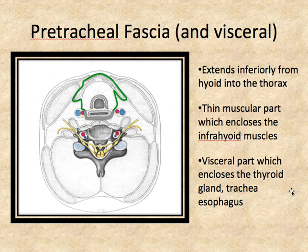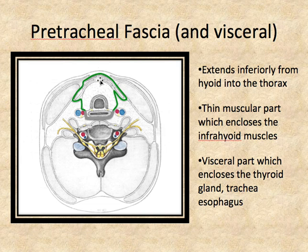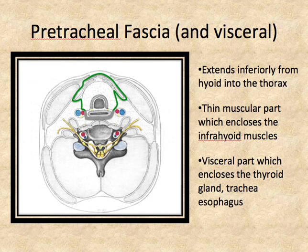The deeper layer of fascia in the anterior part of the neck is called the pretracheal fascia, and it has two parts. It has a thin muscular part that encloses the infrahyoid muscles, and then it has a visceral part that encloses the thyroid gland, trachea, and esophagus. All of this fascial layer is continuous with each other, and we call that pretracheal.